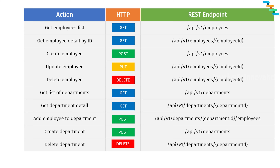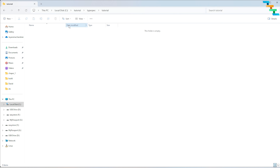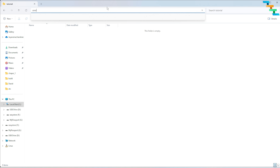Get employee detail by ID retrieves specific details for a particular ID provided as a path parameter. We also have create employee (POST), update employee (PUT), and delete employee (DELETE). For departments, we will have similar operations — get list of departments. At a high level, this is what we are going to build.